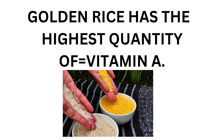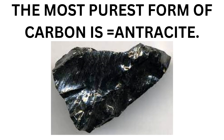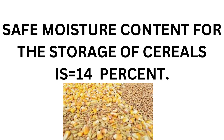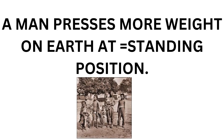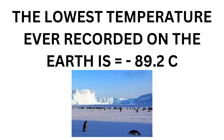The metal extracted from seawater is magnesium. The most pure form of carbon is anthracite. Safe moisture content for the storage of cereals is a specific percent. A man possesses more weight on earth in a standing position compared to lying or sitting position. Saccharine is made up of toluene — saccharine is basically a synthetic sugar.